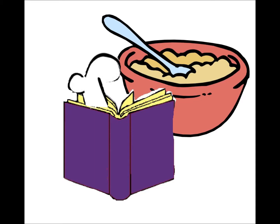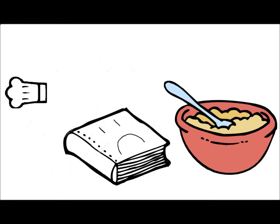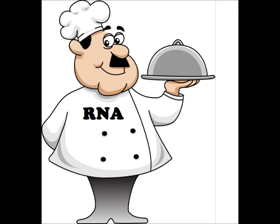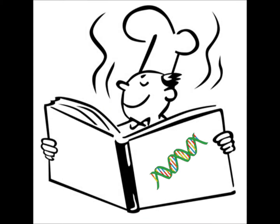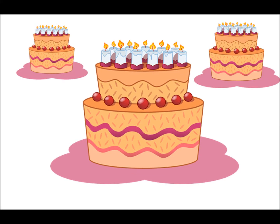DNA is like the recipe in a cookbook. While you need it to make something delicious, like a cake, it does not make the cake itself. In a cell, RNA is the cook. It reads the recipe, and then goes and makes the cake, and it keeps making cake.